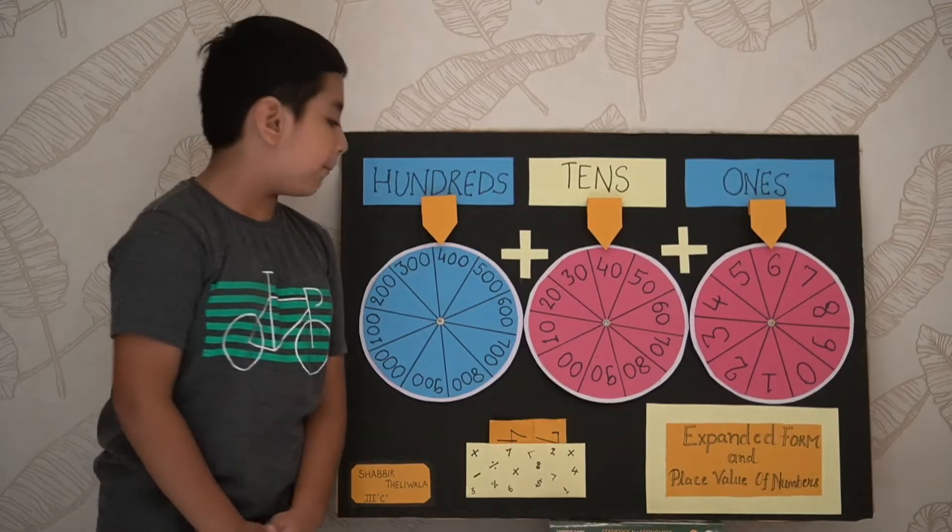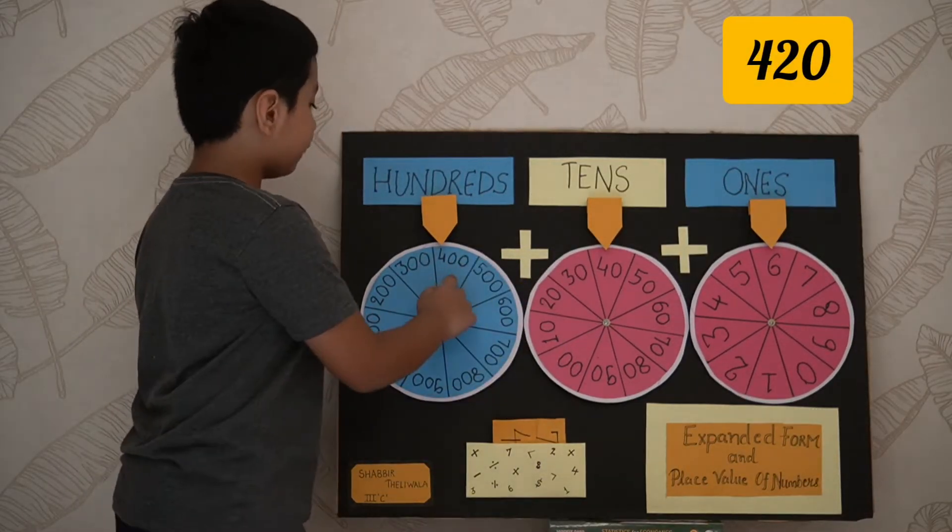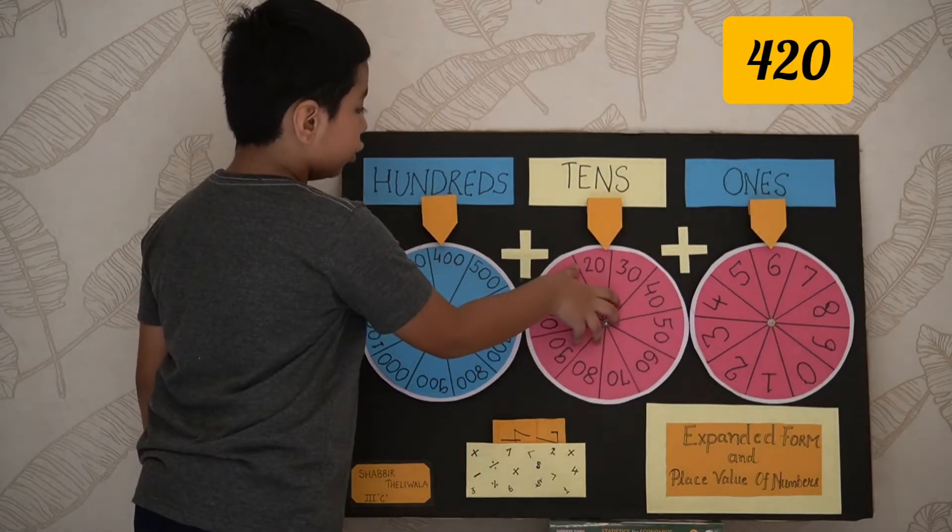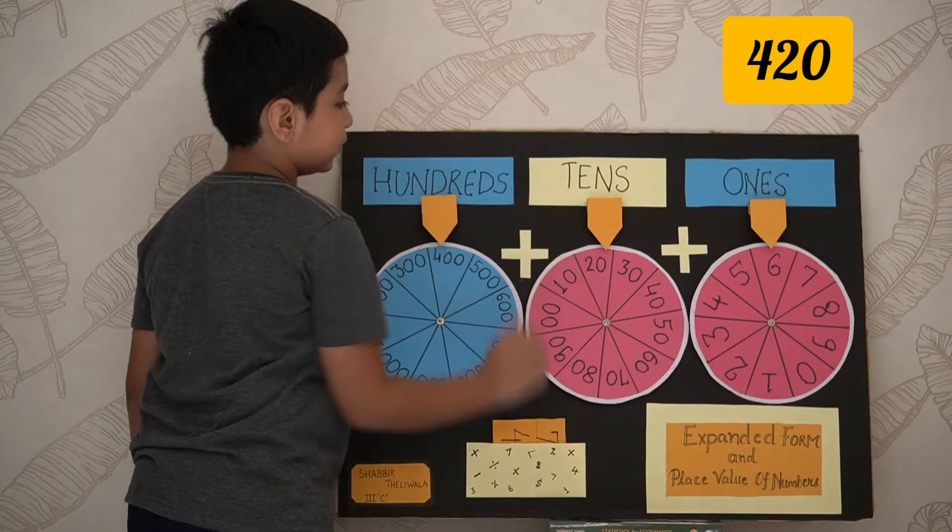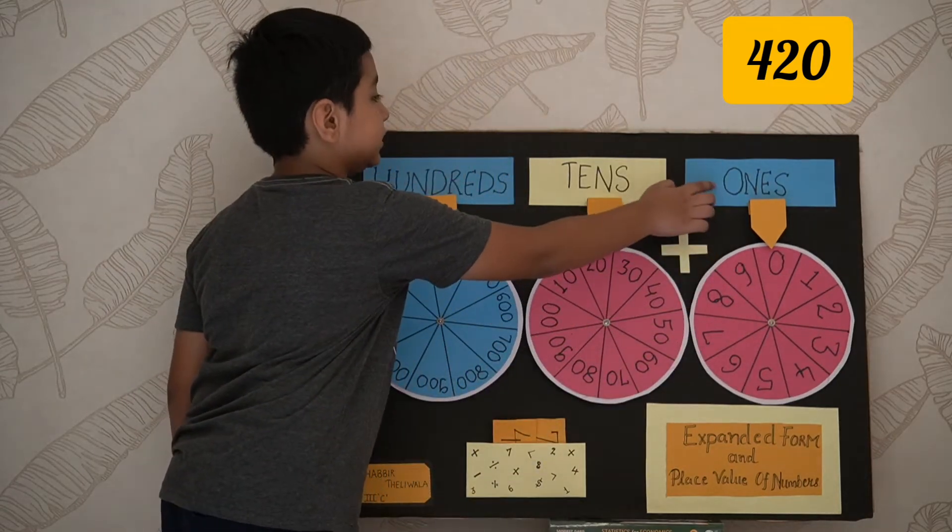Let's take another example, 420. The place value of 4 is 400 because it's at 100th place. The place value of 2 is 20 because it's at 10th place. The place value of 0 is 0 because it's at 1st place.